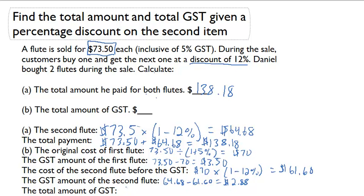Lastly, we can now figure out the total amount of GST by adding together the GST amount of the first flute and the GST amount of the second flute. So it's going to be $3.50 plus $2.88, and that's going to give us a total GST of $6.38. Our final answer for part B is $6.38.